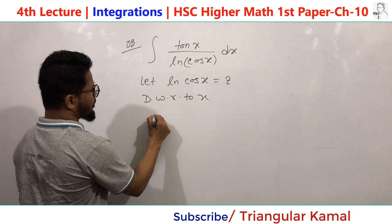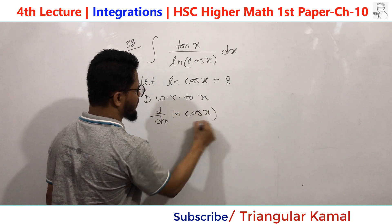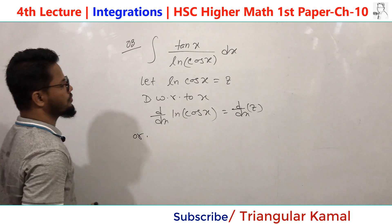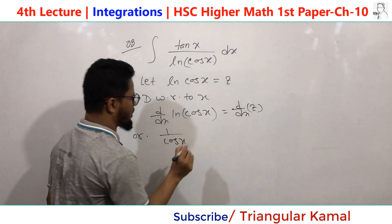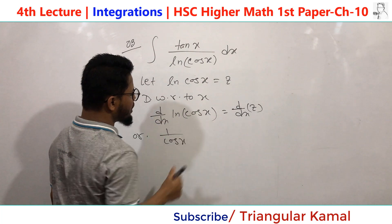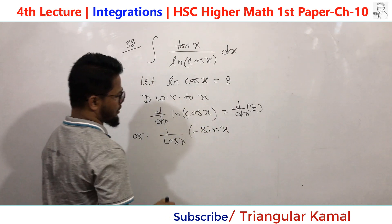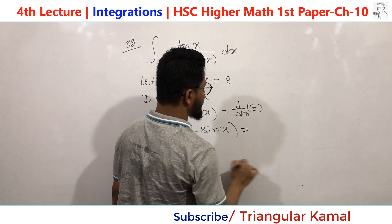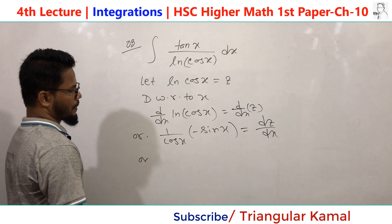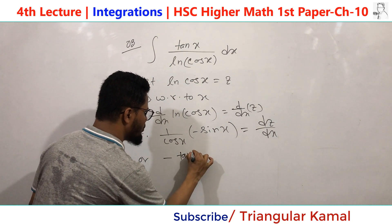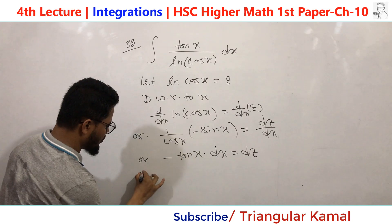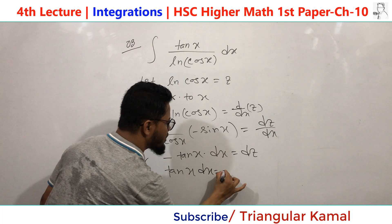Using the formula, the differentiation of ln(cos(x)) gives (1/cos(x)) · (−sin(x)), so dz/dx = −sin(x)/cos(x). Doing the cross multiplication: sin(x)/cos(x) · dx = −dz, that is tan(x) dx = −dz.